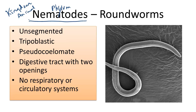First, they are unsegmented, restricting a bit of movement. They are triploblastic, meaning they contain three germ layers: ectoderm, mesoderm, and endoderm.